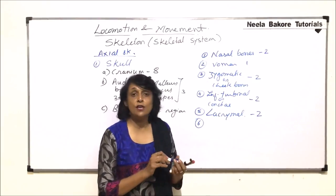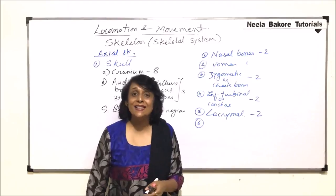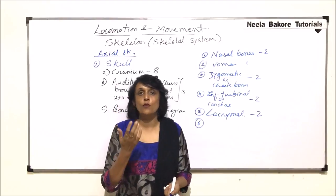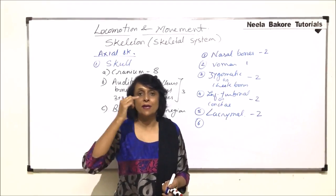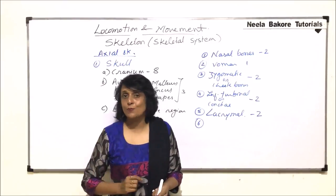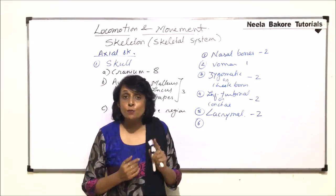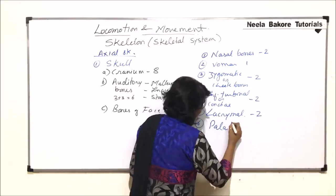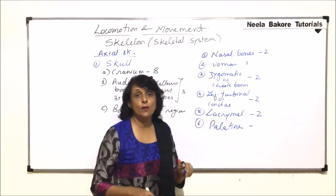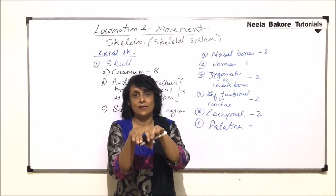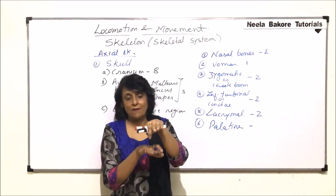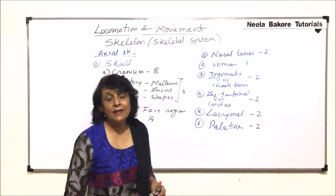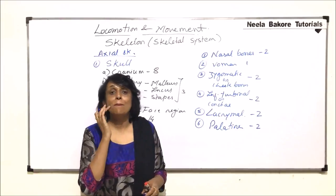The next bones in our facial region are the palatine bones. In the buccal cavity, the roof — which separates the nasal chamber from the buccal cavity — is known as the palate. The anterior part of the palate is bony, and these are the palatine bones. They are two in number and make the roof of the buccal cavity.